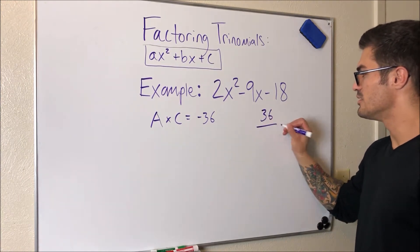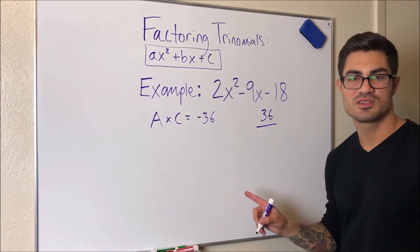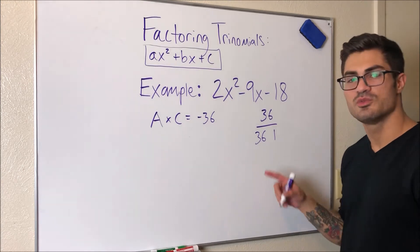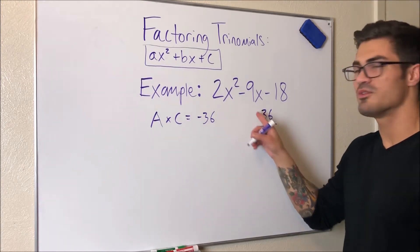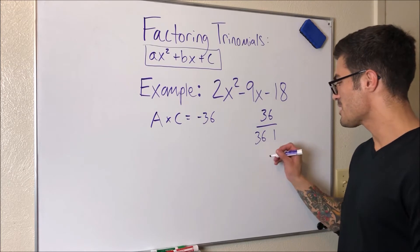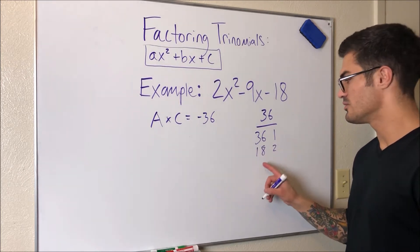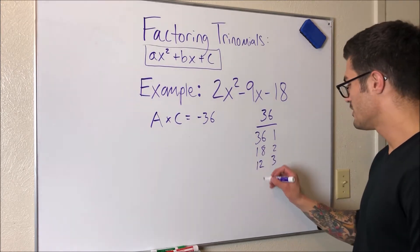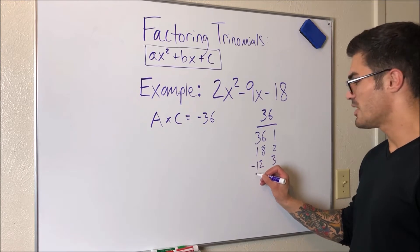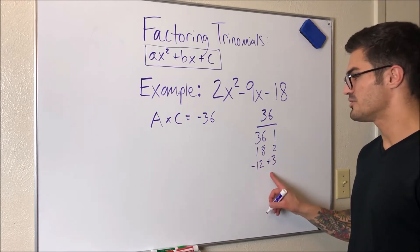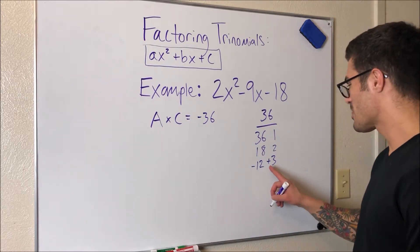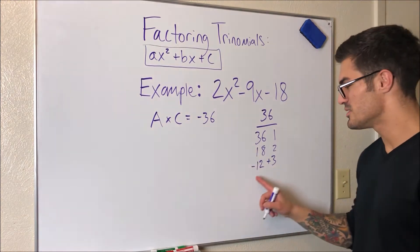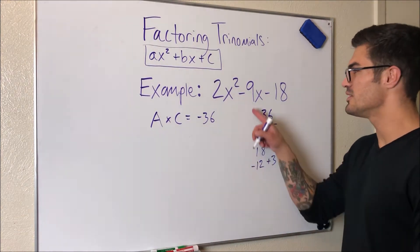I'm going to write down factors of 36 — two things that multiply together to give us 36. 36 and 1, 18 and 2 — that's not going to work. 12 and 3 — this will work. I have to have minus 12 and plus 3. These are the magic numbers, because negative 12 times 3 gives us negative 36, and negative 12 plus 3 gives us negative 9.